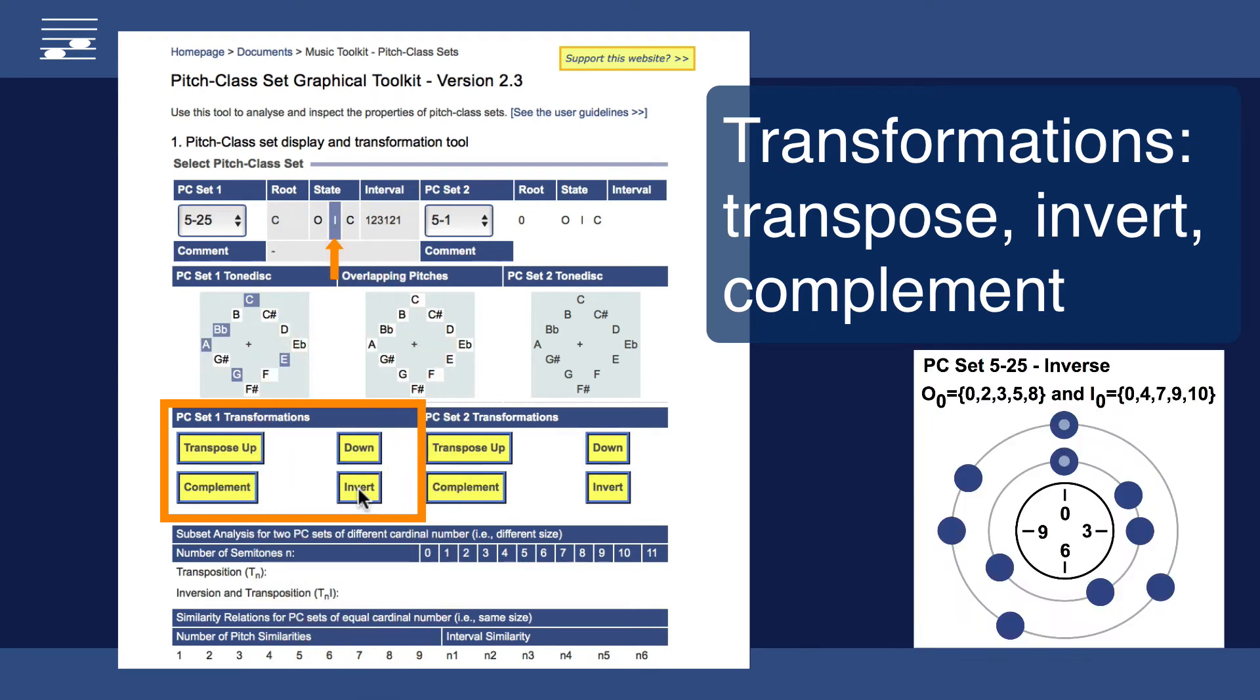Inverting the set highlights the status symbol and shows the ordering of the pitches downward from the root C.